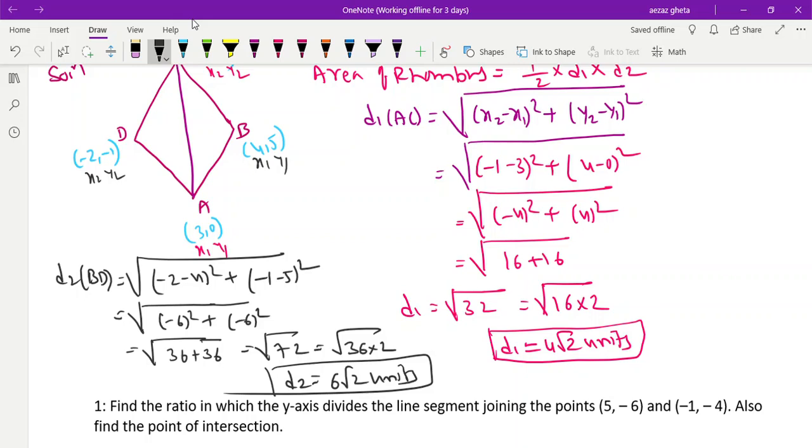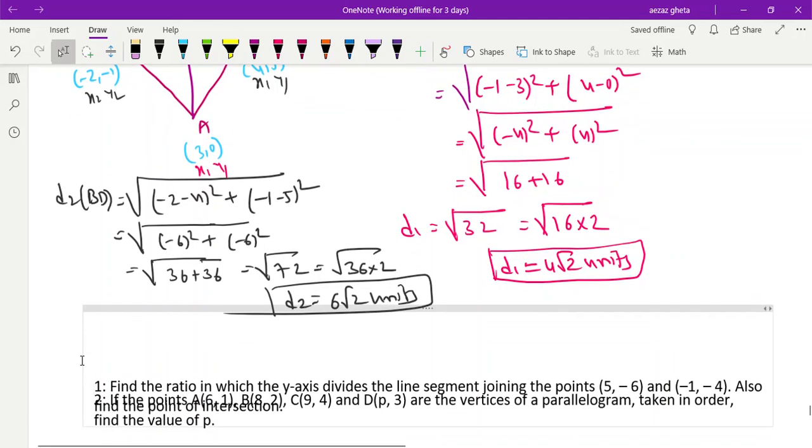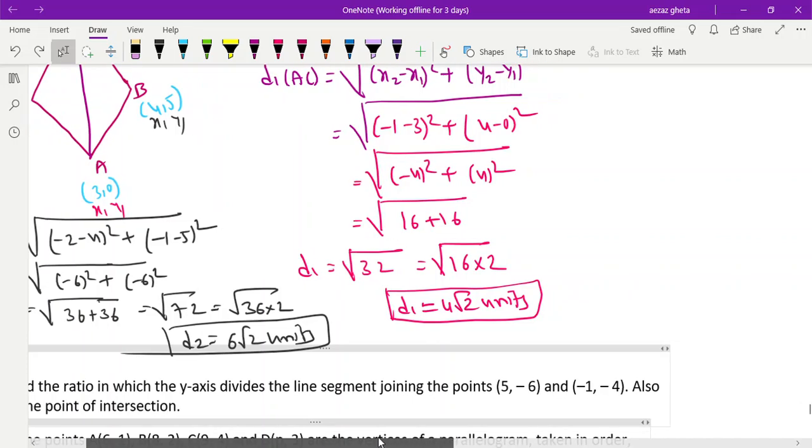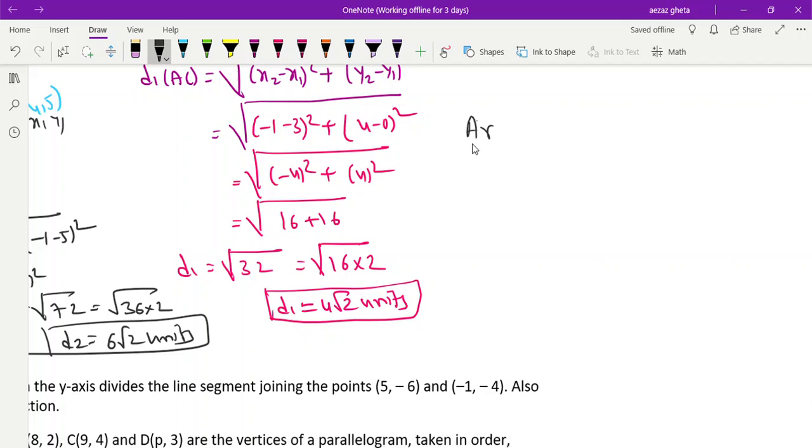Right, now we should find out the area. Let us find out the area. Area of rhombus is equal to half into diagonal 1 into diagonal 2.